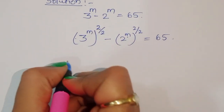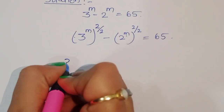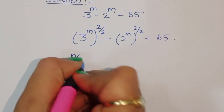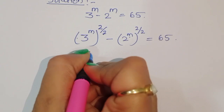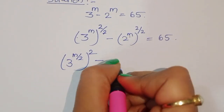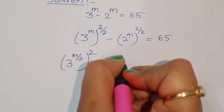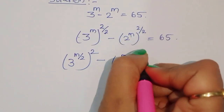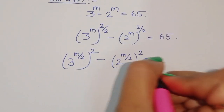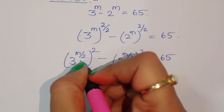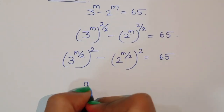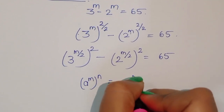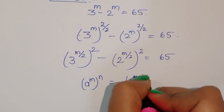Now we can rewrite this. We use the formula: a power m power n equals a power n power m. So 3 power m by 2, and this is squared, minus 2 power m by 2, and squared, is equal to 65.